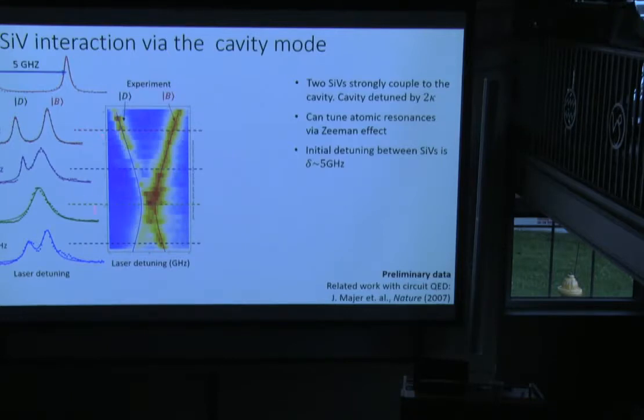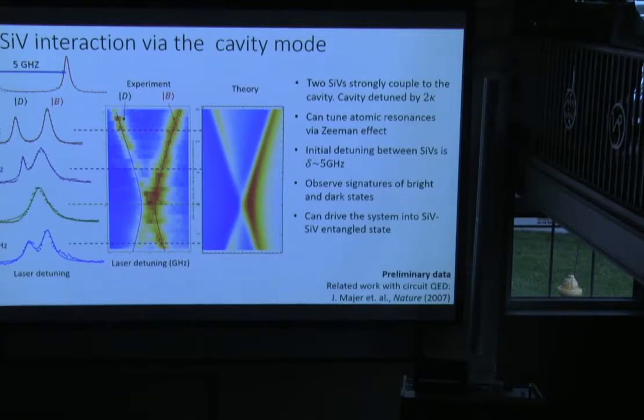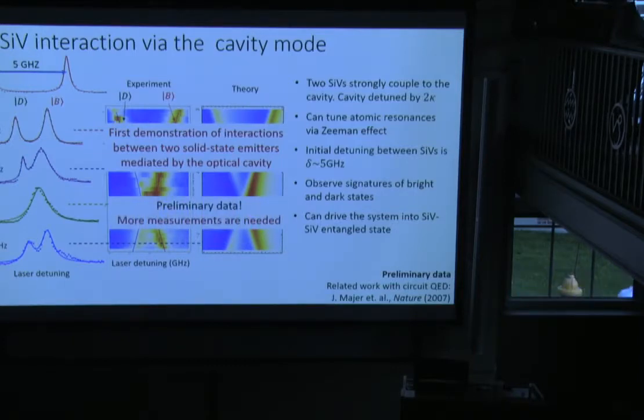When you start to tune them close to each other, for example here the detuning is about 2.4 gigahertz, interactions start to play a role and atoms form bright and dark states. Since the dark state is not coupled to the cavity as much as the bright state, its peak is a little bit lower. If you keep moving closer, the effect is more dramatic. When you are on resonance, the dark state disappears - it's not coupled to the cavity at all because of symmetry. If you keep moving further, the bright state repels from the dark state. It's like an avoided crossing. This 2D plot shows the avoided crossing much better. Here we have the bright state and dark state. On this axis, we plot the detuning between atoms, delta. Our experimental data match the theory plot pretty well. This is one of the first demonstrations of interactions between two solid-state emitters which are mediated by an optical cavity mode. The data is preliminary - it was taken basically last week. We need much more measurements to convince everyone.